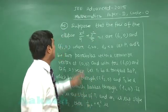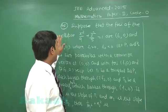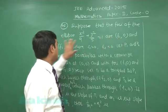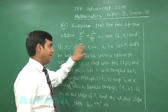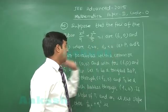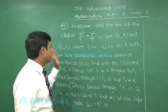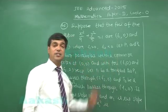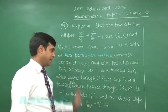Question number 42. Suppose the foci of the ellipse x²/a² + y²/b² = 1 are F₁ and F₂. Let P₁ and P₂ be two parabolas with a common vertex at the origin and foci F₁ and F₂ respectively.